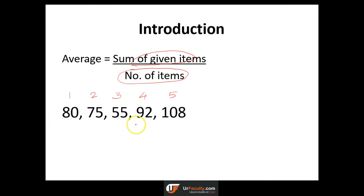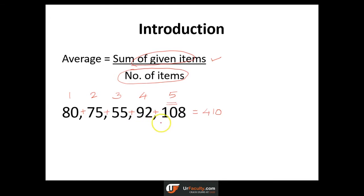So whatever be it, the question is how do we arrive at the average of all these 5 items? The first step is sum of given items: 80 plus 75 plus 55 plus 92 plus 108, which equals 410. And how many items do we have? We have 5. So average is equal to 410 by 5, which is equal to 82. I think it's a fairly straightforward step.